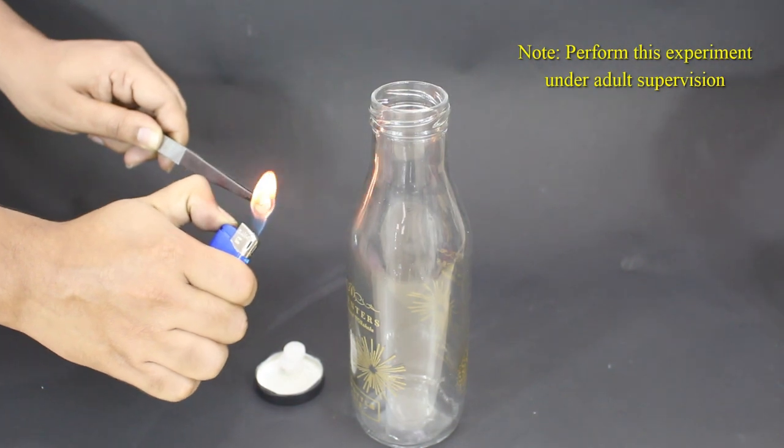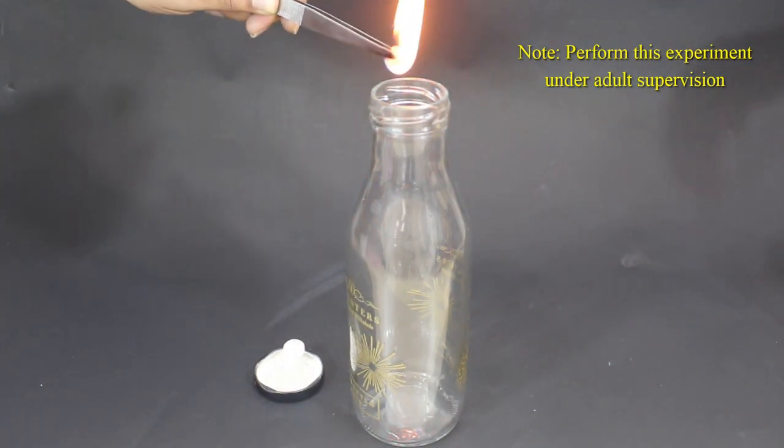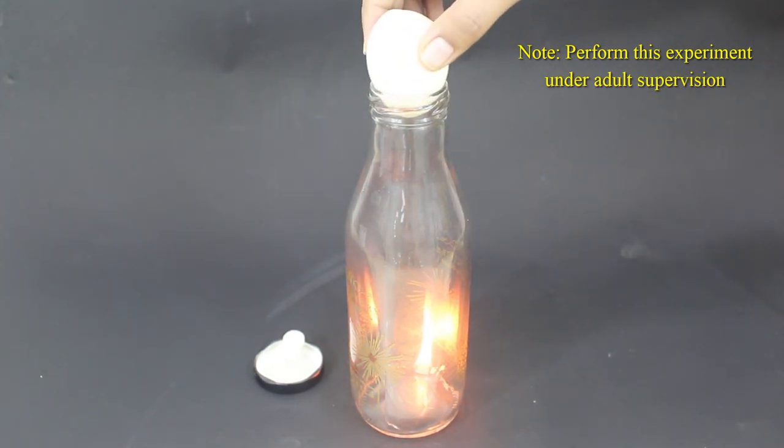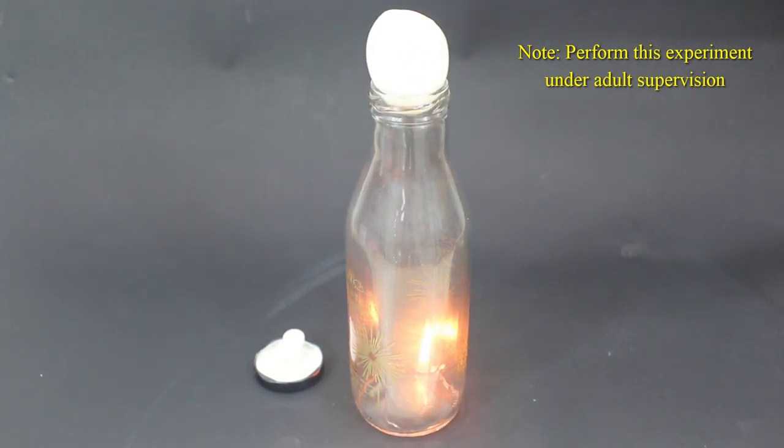Now hold the camphor with tongs and light it up with a lighter or a matchstick. Drop it in the bottle. Place the egg on the bottle. As the camphor extinguishes, the egg will get sucked in the bottle.